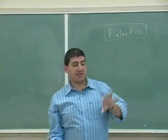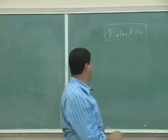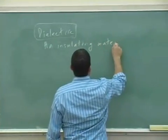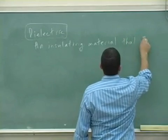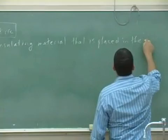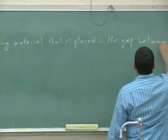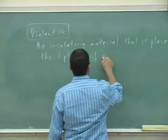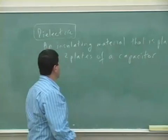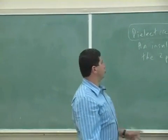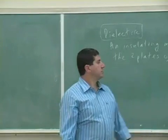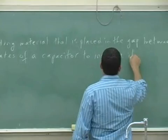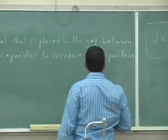A dielectric is an insulating material that is placed in the gap between the two plates of a capacitor. The reason we do that is to increase its capacitance.